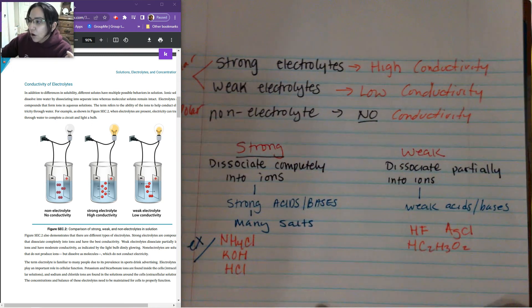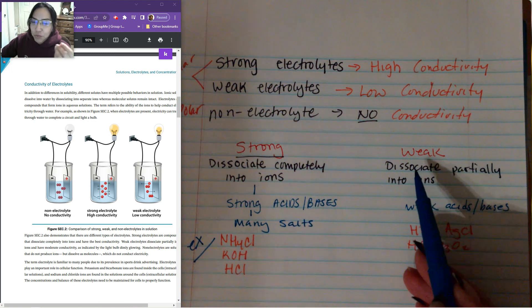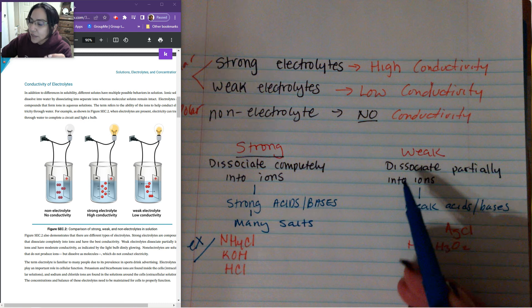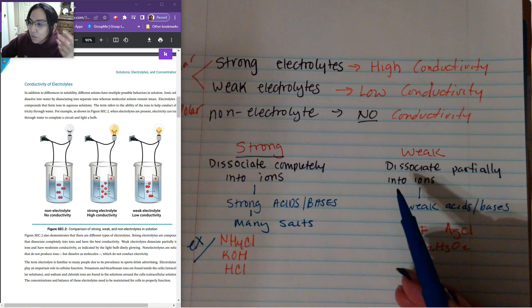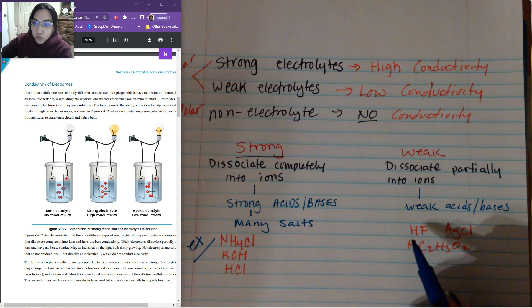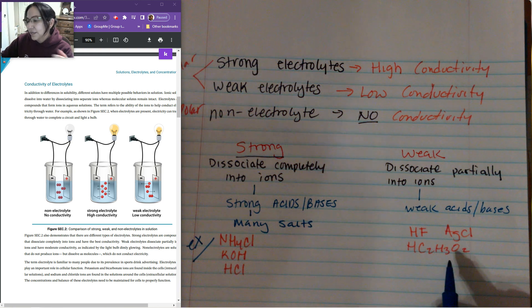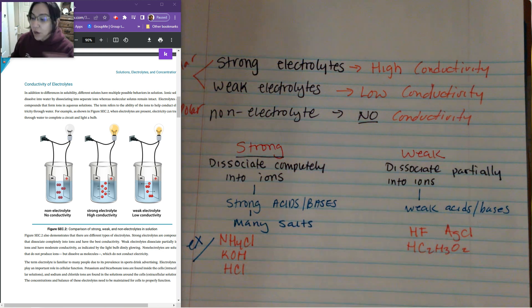And for our weak ones, weak electrolytes, so it produces very little conductivity. It's because they only dissociate partially into ions. They don't completely break apart. So hydrofluoric acid, silver chloride, and acetic acid. They only break apart partially and don't create that strong electrolyte that we see.